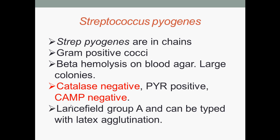Moving on to streptococcus. The first bacterium in this genus is Streptococcus pyogenes. They are gram-positive cocci arranged in chains, exhibit beta-hemolysis on blood agar, and form large colonies. Beta-hemolysis is complete hemolysis of blood — the media around and under the colonies appear lightened, yellow, and transparent. They are catalase negative, PYR positive, and CAMP negative. The PYR test was designed for presumptive identification of group A streptococci and enterococci by determining the presence of the enzyme L-pyrrolidonyl arylamidase.